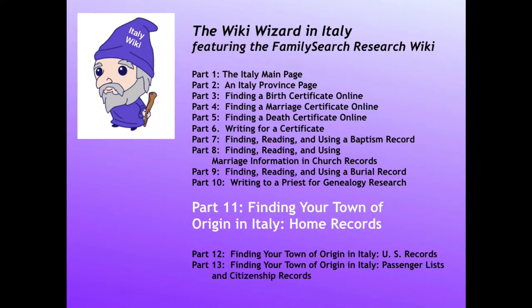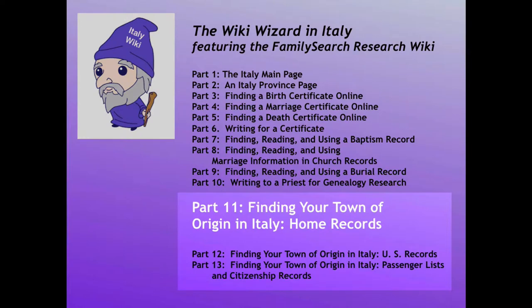This is the 11th video in a series intended to help you use the different tools of the FamilySearch Research Wiki to find records about your ancestors in Italy. The records of Italy are great, but in order to get to them, you have to know the town of origin in Italy. The next three lessons will deal with sources you can use to find out what that town was if you do not now know it.